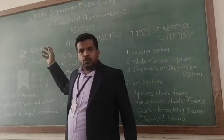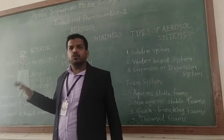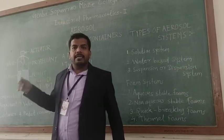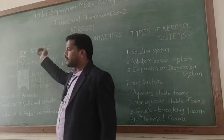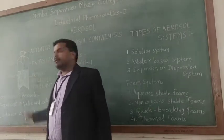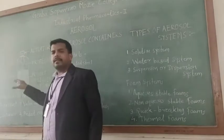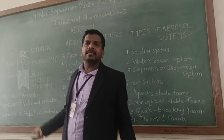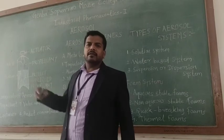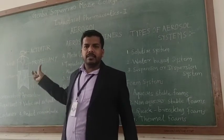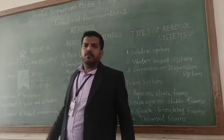The third component is the valve, which regulates the amount of drug to be expelled from the container. The fourth component is the container itself. The container can be made up of different substances like metals, aluminium, glass, or plastics, depending on the availability or the therapeutic drug to be incorporated. Depending on the therapeutic action, we can change the substances used in manufacturing the container.